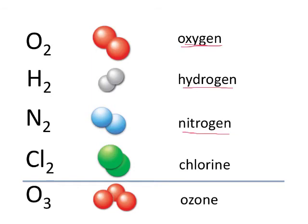Then we have chlorine gas, which is Cl2, often represented by green. And then down at the bottom, this is not a diatomic molecule — this is another form of oxygen. It's called ozone, and it is actually O3.